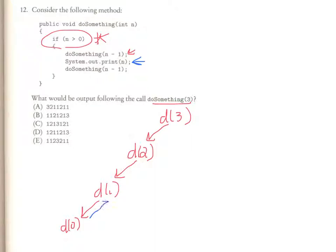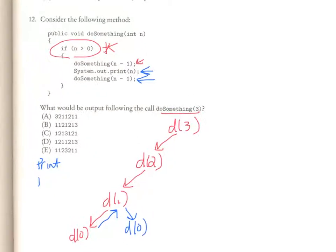So I go back up here to d1, and for do something 1, my n value is 1. So what I'm going to do is I'm going to go ahead and I'm going to print a 1. And now, I'm going to call do something of n minus 1. So now, I call do something of 0. And at this point, I encounter that exit clause again.